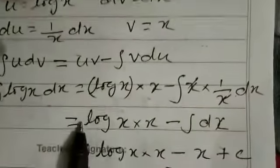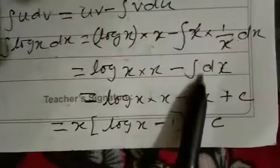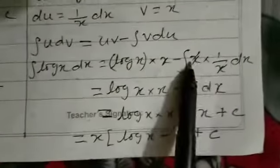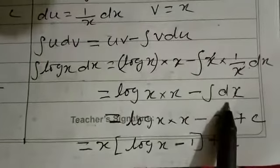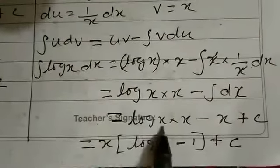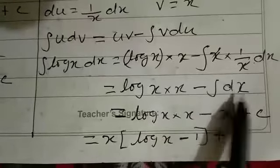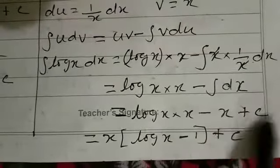Equal to log x into x minus integration of, here x and x is getting cancelled. So integration of dx. And then equal to log x into x minus, when we are integrating dx means it is x plus c.